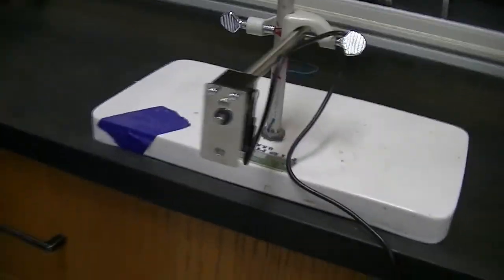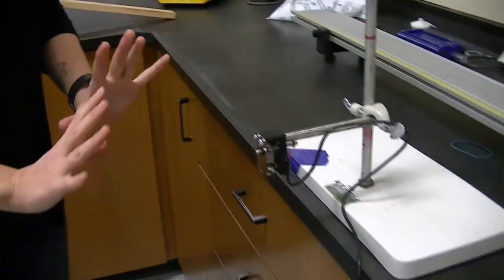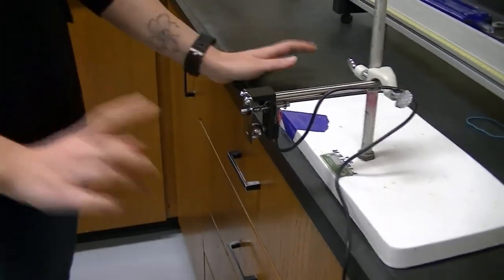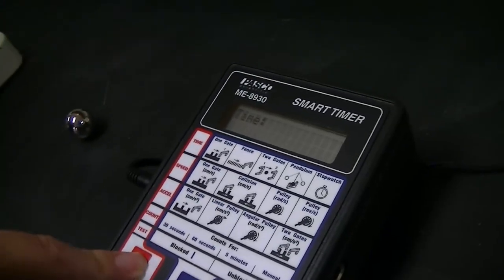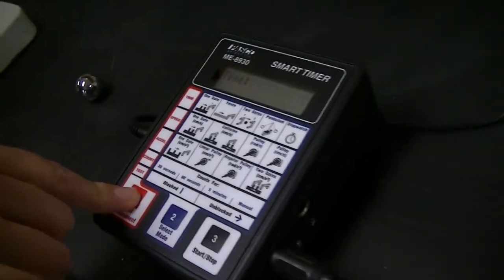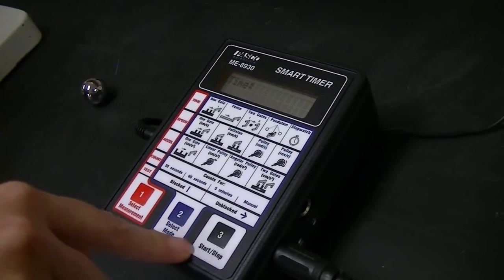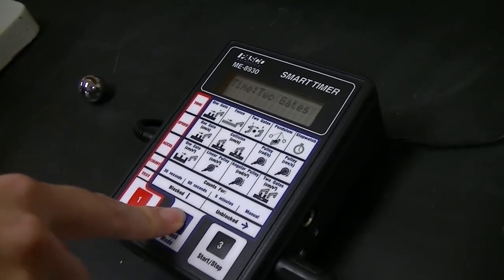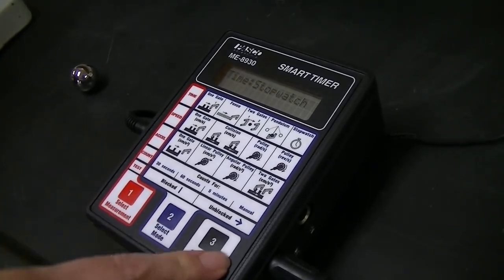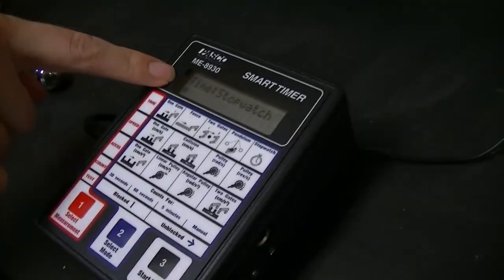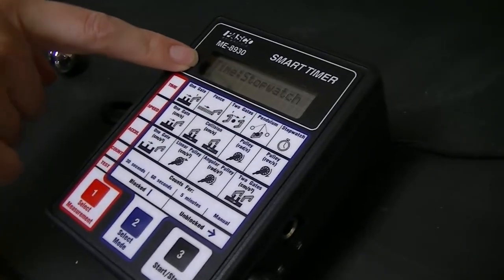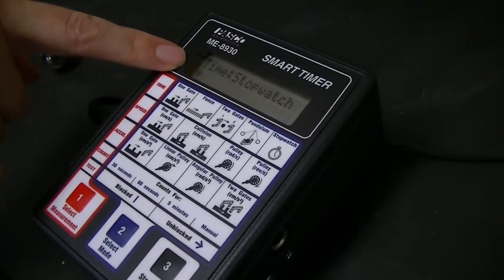Now, before I drop the ball, I want to make sure that my timer is set up correctly. So looking at the timer, I need to have it on time, so the red button until you get on time, the select mode until I get on stopwatch, and then for every trial, I want to press the start-stop button so that I see that asterisk. That asterisk is telling me that it's ready, and I can drop the ball.